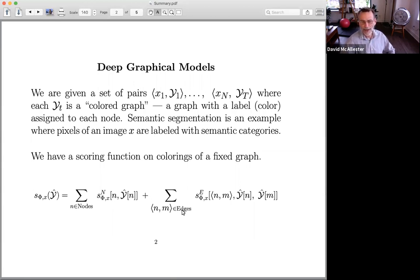And also for each edge in the graph, we're assuming a tensor that for each edge and each pair of colors for that edge assigns a score for that coloring of that edge. This is a kind of compatibility score.